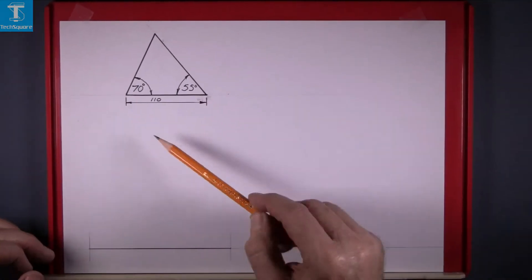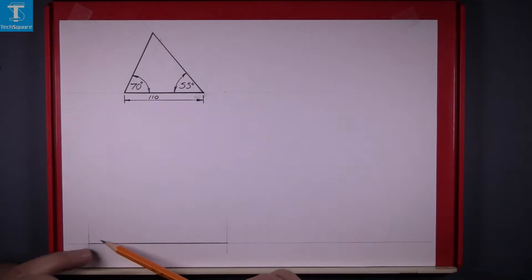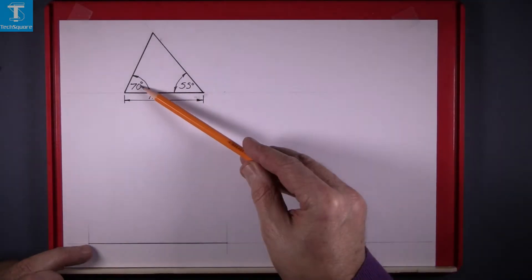So, the first thing we do is mark off this line down at the bottom of the sheet, 110 long, and set up the angle at this side. It's 70 degrees.